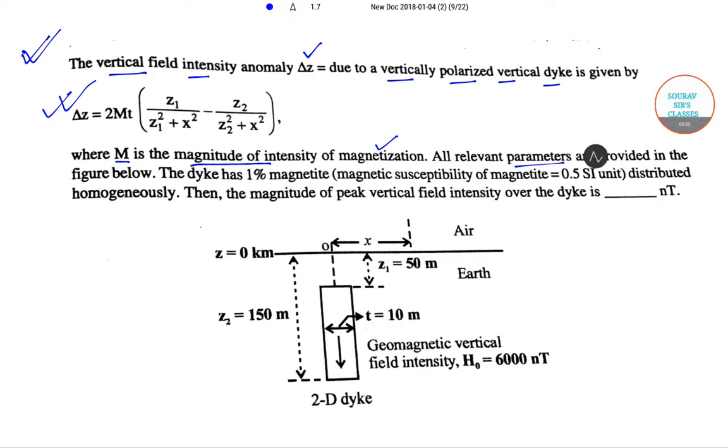All relevant parameters are provided in the figure given below. This is how it looks like. Now the dyke has 1% magnetite with magnetic susceptibility of 0.5 SI unit distributed homogeneously. The magnitude of peak vertical field intensity over the dyke is what we need to find out.